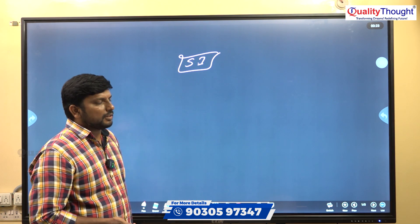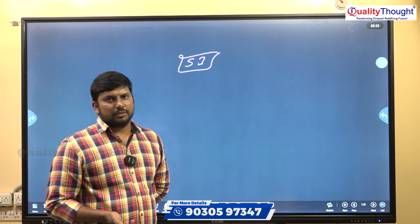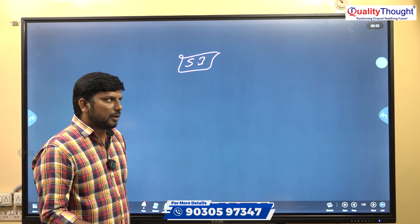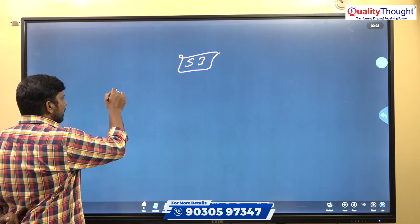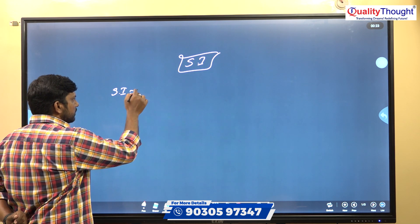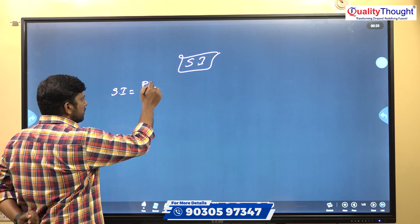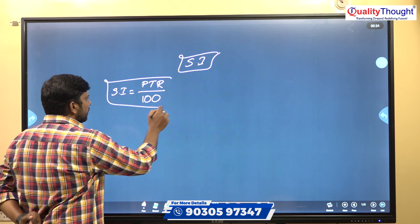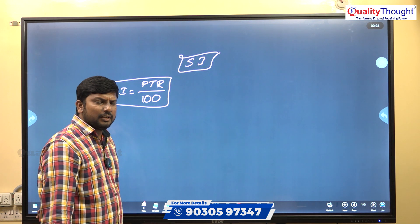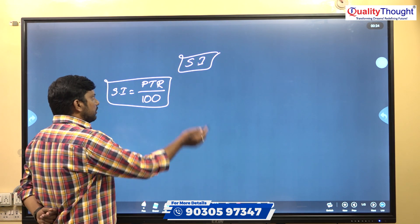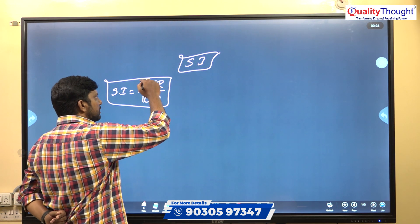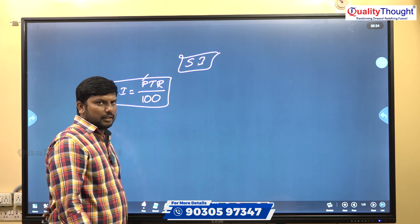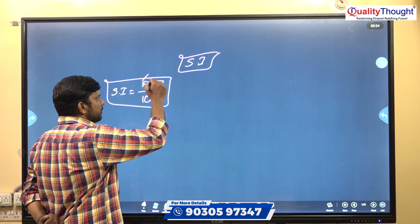So how do we find the formula for simple interest? To find simple interest, the formula is PTR divided by 100. Here, P stands for principle — the amount which we have invested — and that is known as principle.